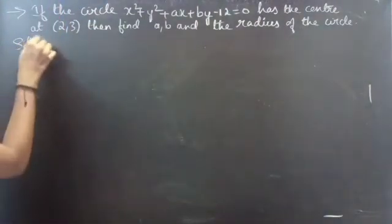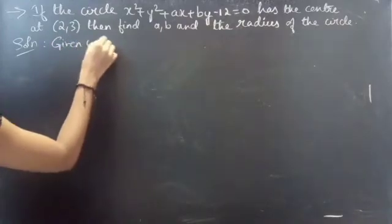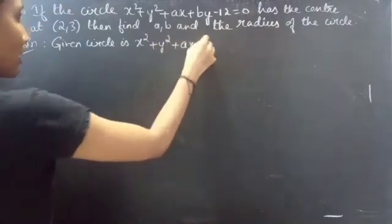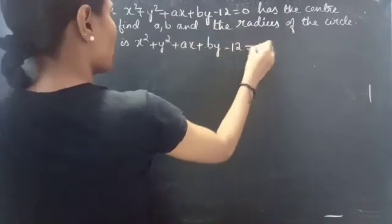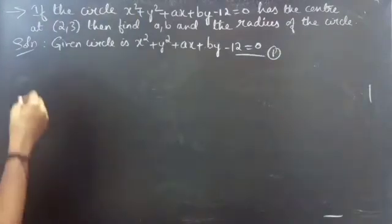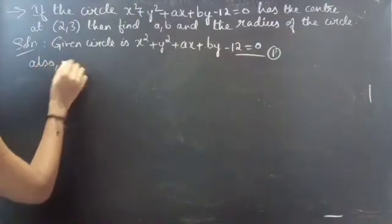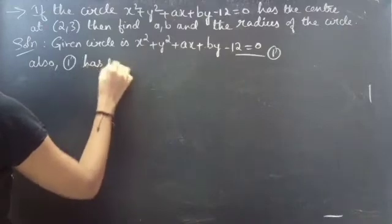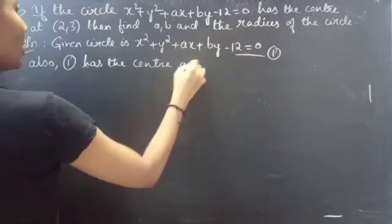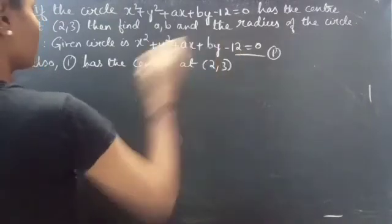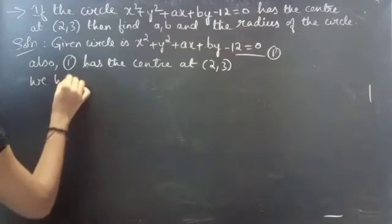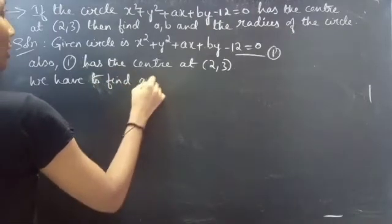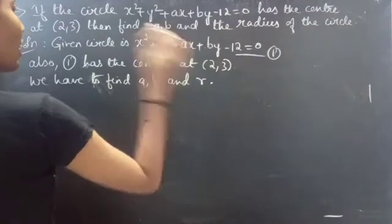Solution: the given circle is x² + y² + ax + by - 12 = 0, considered as equation number 1. We are also given that the circle has the center at (2, 3). We have to find a, b, and r.